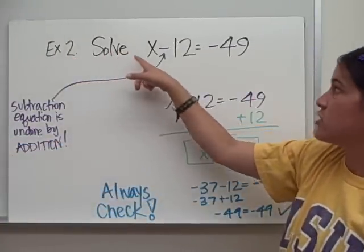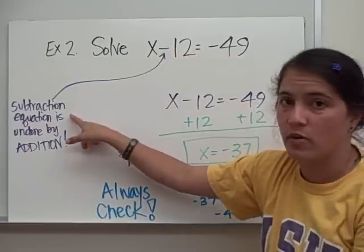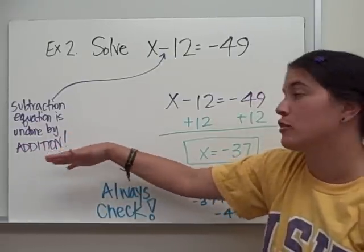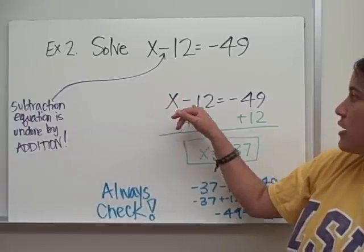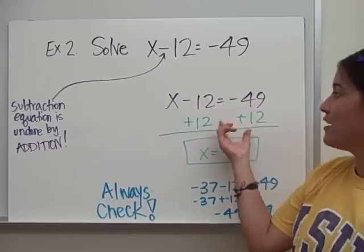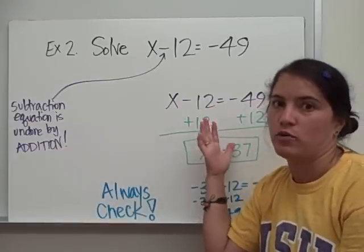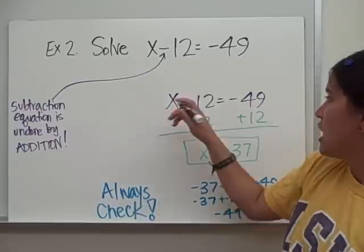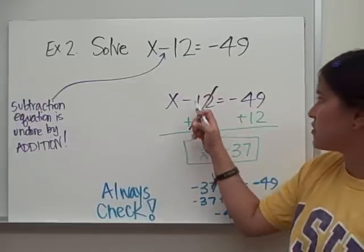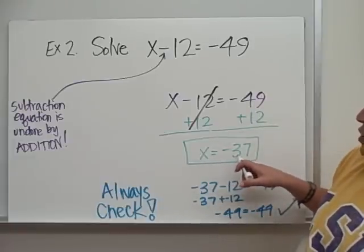Example 2: solve x minus 12 equals negative 49. We have a subtraction equation, and the inverse of subtraction is addition, so we are going to use addition as the inverse operation. I've rewritten my equation — x minus 12 equals negative 49 — and added 12 to both sides. That's the addition property of equality. The 12 and negative 12 add to 0, and negative 49 plus 12 gives x equals negative 37.